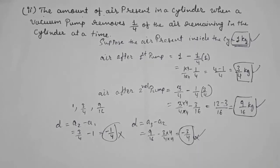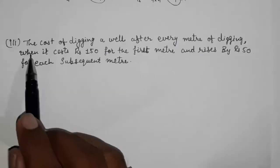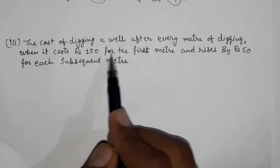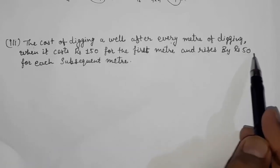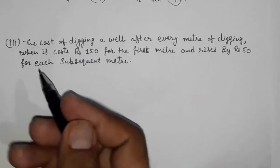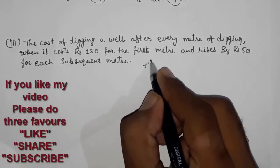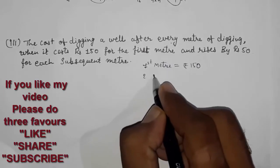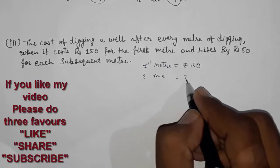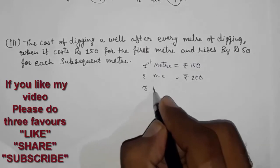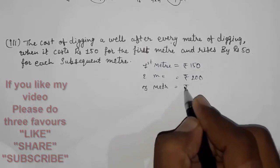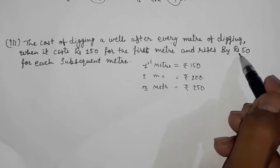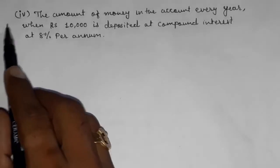Moving to the third question: the cost of digging a well after every meter of digging, when it costs rupees 150 for the first meter and rises by rupees 50 for each subsequent meter. For one meter: rupees 150. For two meters: 150 + 50 = rupees 200. For three meters: rupees 250. Every time 50 increases, so d = 50 consistently — this is forming an AP.